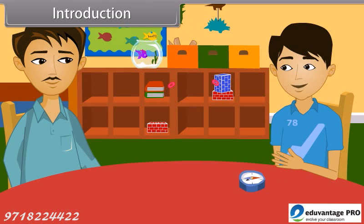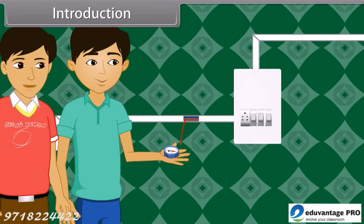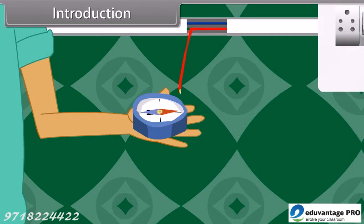I took the compass to my friend's place. They have some electric work being done in their house. We were playing with the compass very close to an open wire. Suddenly, for no reason, the compass needle got deflected.